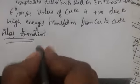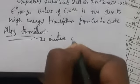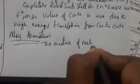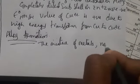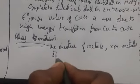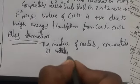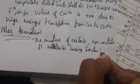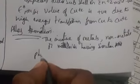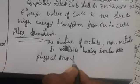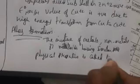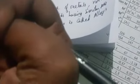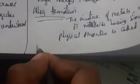Alloy formation: the mixture of metals, non-metals, or metalloids having the same physical properties is called an alloy. Alloys are generally useful to modify properties like malleability, ductility, and toughness — all of these can be modified.